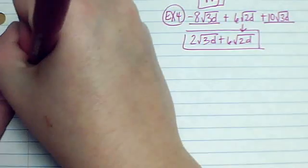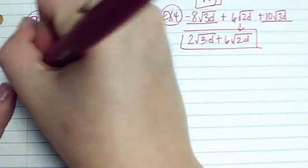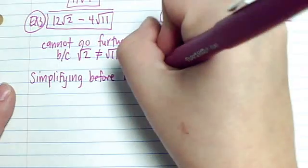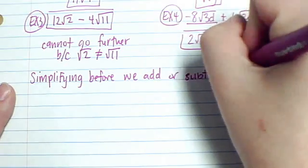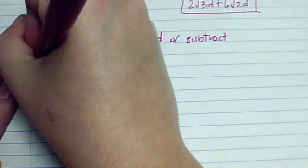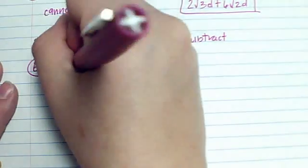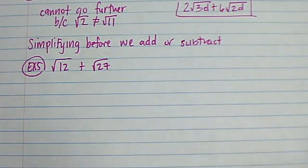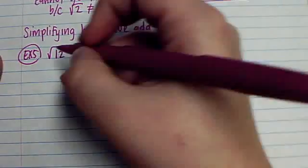Now we need to take into account what we learned yesterday and simplify before we add or subtract. For example, I have root 12 plus root 27. If you look at this first you should think I can't add those because they're not the same, but we need to simplify them to see if after simplifying we can add them.